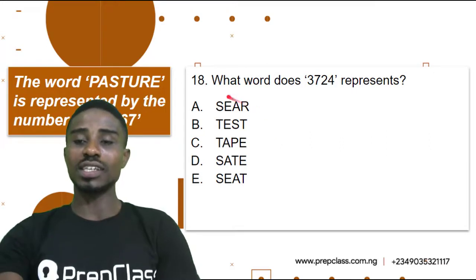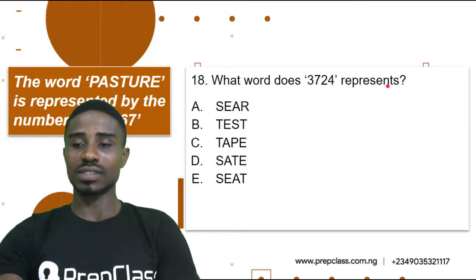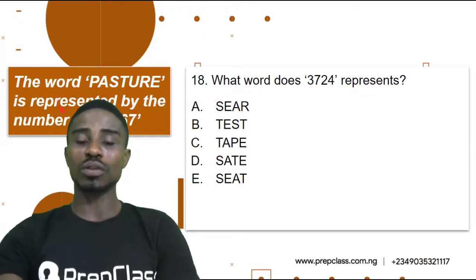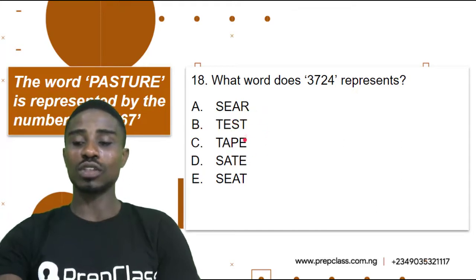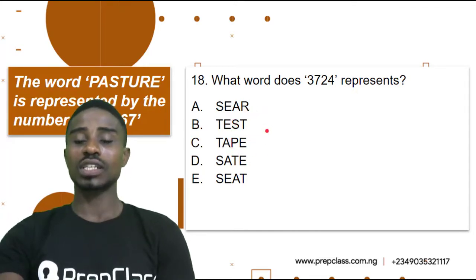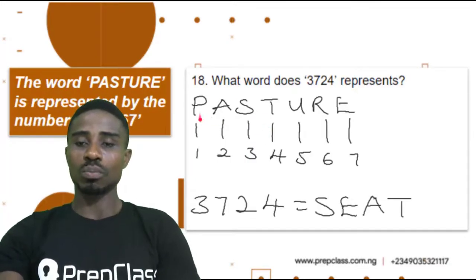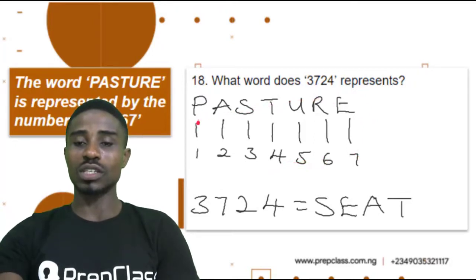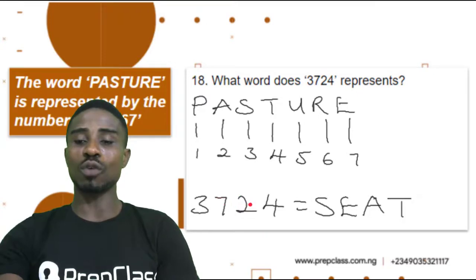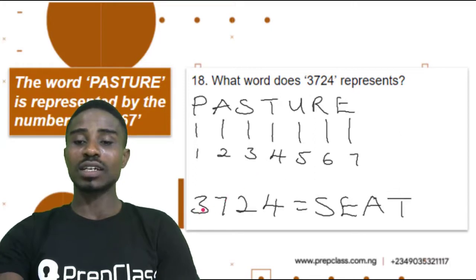Question 18: what word does 3, 7, 2, 4 represent? Still using PASTURE as our sample, we are going to use it to resolve this question. Let's check how to get it done. Using PASTURE, we are going to look at what alphabet represents each of these numbers.